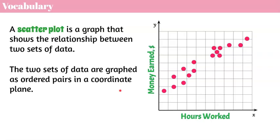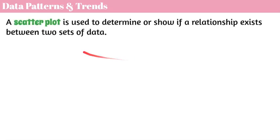So you might survey somebody and say, how many hours did you work, and how much money did you earn? If you made a table of values, your X would be the number of hours they worked, and your Y would be the amount of money they earned — that would be your ordered pair. Each one of these data points represents the people you asked those two questions to, and then you put them all on one graph to see what type of relationship, if any, is formed. We call that bivariate data, because 'bi,' like bicycle — two wheels — means two pieces of data. A scatterplot is used to determine or show if a relationship exists between two sets of data.